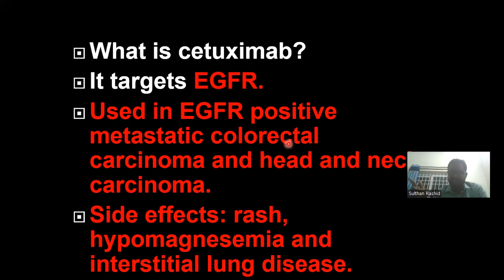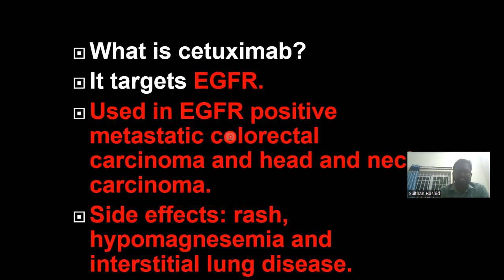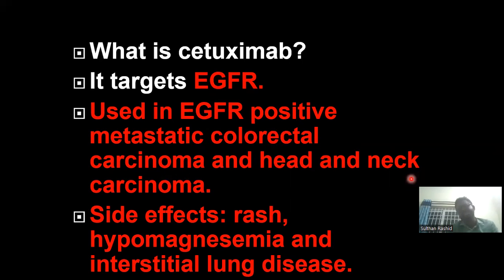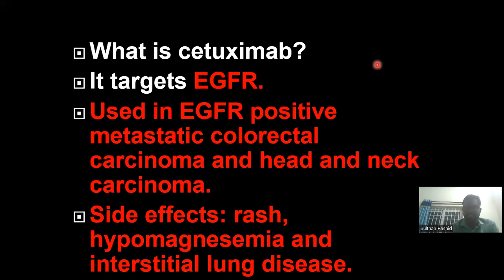Now comes cetuximab — part of our 'Punjab Cricket Board' mnemonic. It targets the epidermal growth factor receptor (EGFR) and is used in EGFR-positive metastatic colorectal carcinoma. It is also used in head and neck carcinomas. The side effects of cetuximab include rash, hypomagnesemia (reduced serum magnesium concentration), and interstitial lung disease.